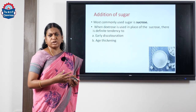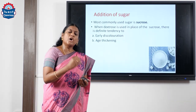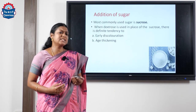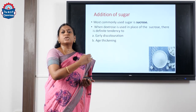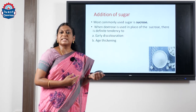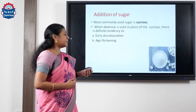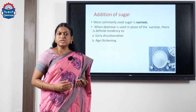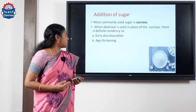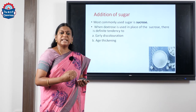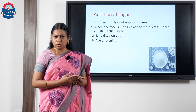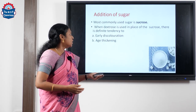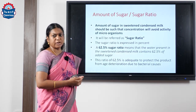The sugar used in making sweetened condensed milk is sucrose. Sucrose has the desired qualities for sweetened condensed milk. We can also think about dextrose, but the problem with dextrose is that it tends to easily discolor during storage and may lead to age thickening during storage. So sucrose is the most preferred one.